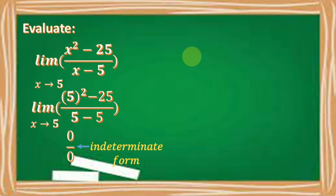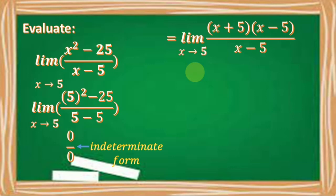And so, instead of substituting right away the value of c, which is 5, in our given function, we can factor first our given numerator such that one of its factors is the same as the denominator. So by factoring, we have x plus 5 times x minus 5 over x minus 5.